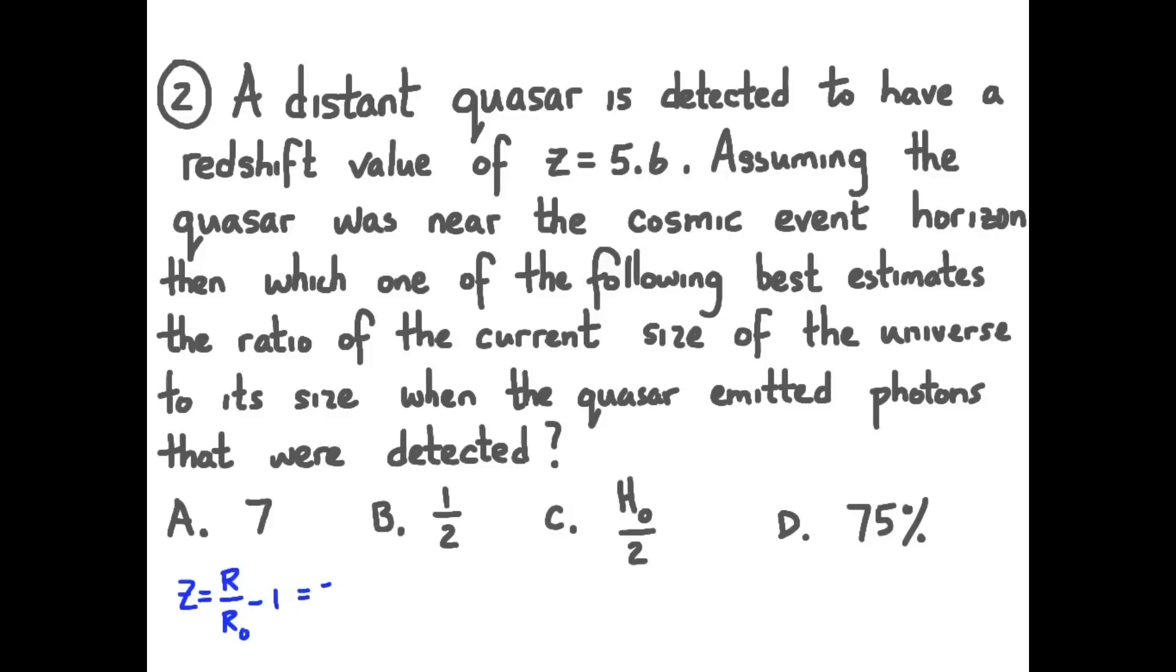The redshift value z equals r over r naught minus 1, and that equals 5.6. So we're solving for r divided by r naught. r over r naught is 6.6, about equal to 7. Our answer is A.